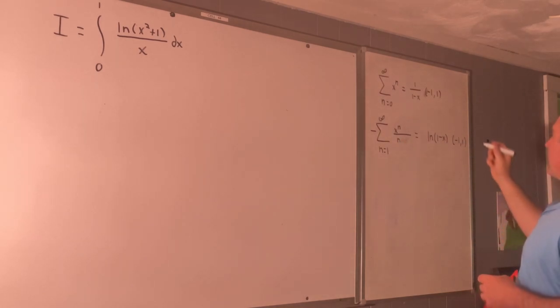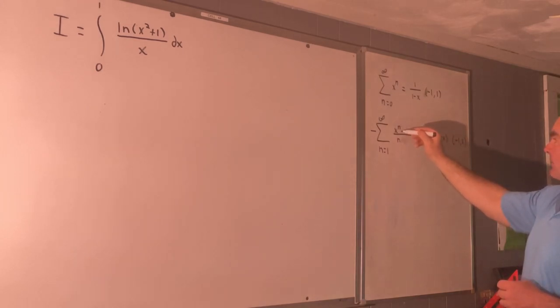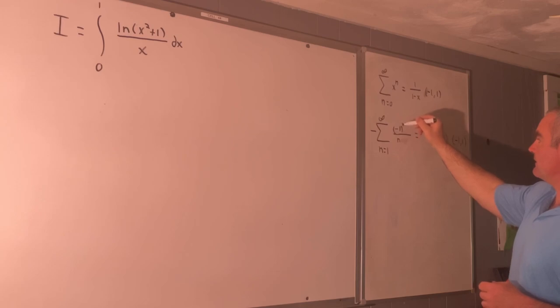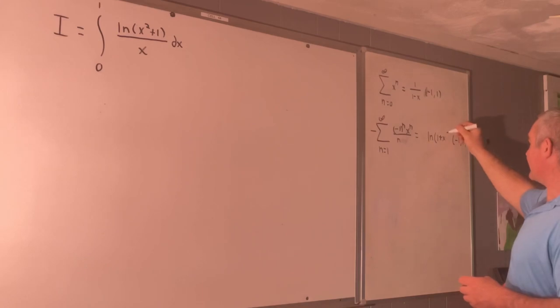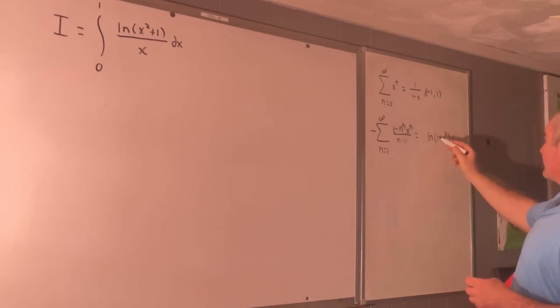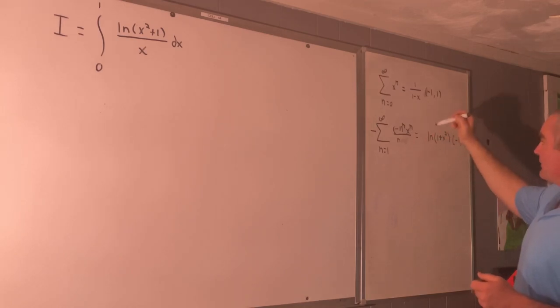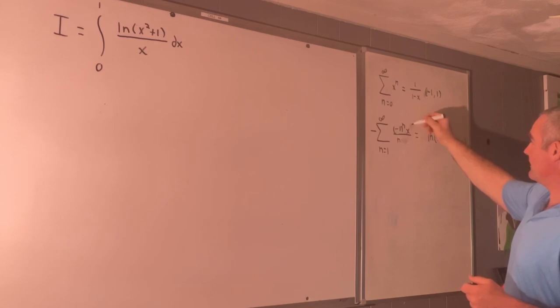Well what happens if we make this a plus x? Well that just makes our x here a negative x to the n which is just negative 1 to the n times x to the n. So now that's true. Well how about this? We'll just add a square to there. So we know that natural log 1 plus x is equal to this. So now we just replace x with an x squared to the n or just x to the 2n.